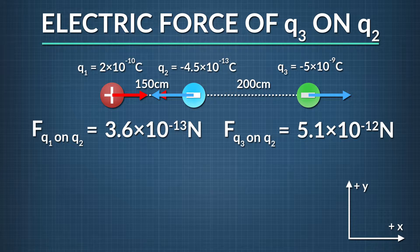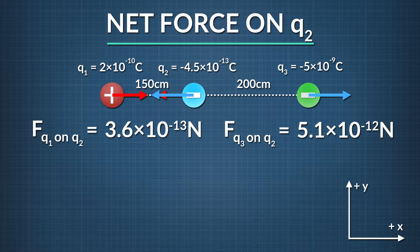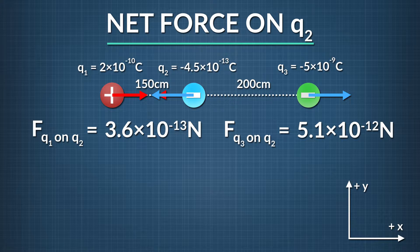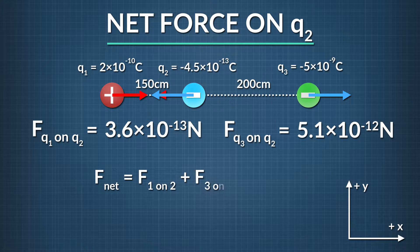The last step to finding the net electric force on q2 is to add these two forces together. Since electric force is a vector quantity, and the forces both point in the negative x direction, we find the net magnitude by adding the individual magnitudes together.